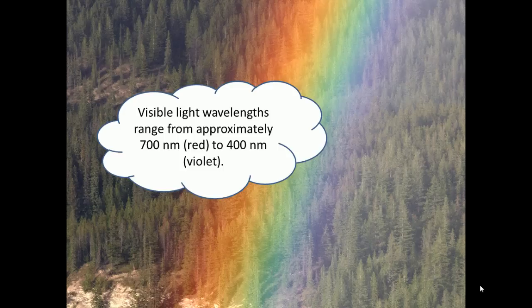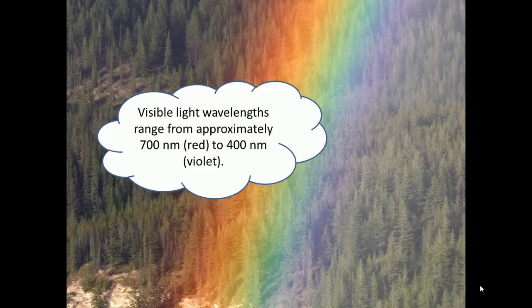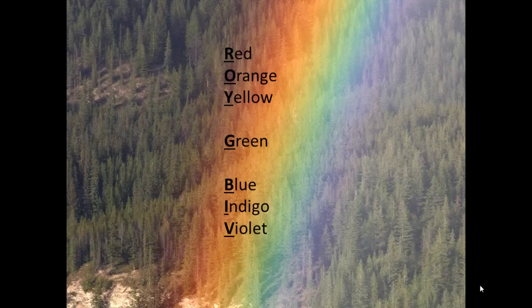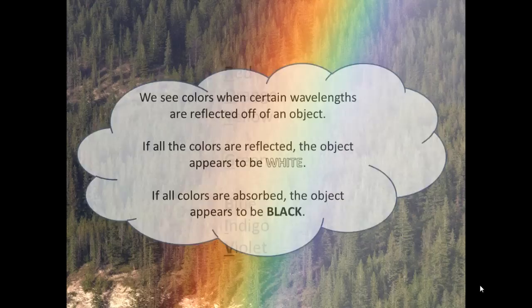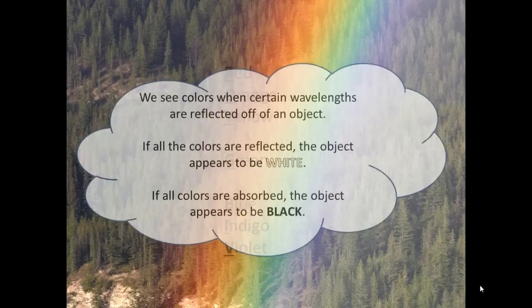One way to remember the order of visible light from longest wavelength to shortest wavelength is to remember ROY G BIV. The color red is the longest wavelength while violet is the shortest wavelength. We see colors when certain wavelengths are reflected off of an object. If all the colors are reflected the object appears to be white, if all the colors are absorbed the object appears to be black.